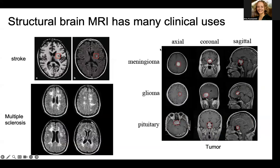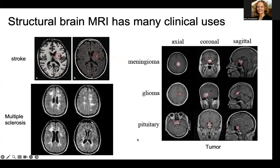Structural brain MRI has many clinical uses in current clinical practice. Here is an example of a person who's had a stroke in a specific part of their brain, and you can see there's a very high contrast of the area of damage or injury. It's also used to image white matter lesions in multiple sclerosis — you can see all of these hyper-intense white matter lesions. And then, of course, using it to image where tumors are in the brain for pre-surgical planning.